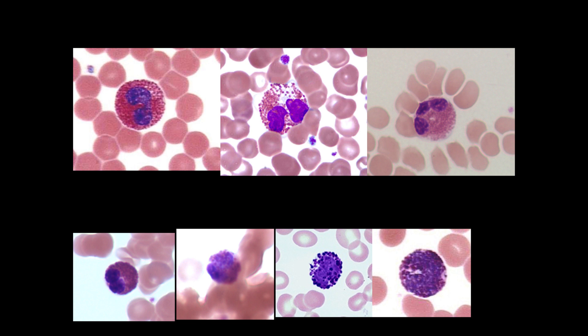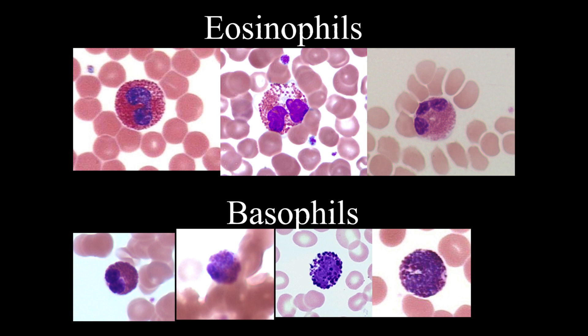Eosinophils and basophils are the unicorns of leukocytes — the most difficult to find — and students get excited when they finally spot one. Eosinophils and basophils are also granulocytes, but unlike neutrophils their granules are really well defined — the cytoplasm looks like it's carrying real pebbles. The difference between them is that eosinophil granules stain pinkish-red, while basophil granules stain dark purple or dark blue.